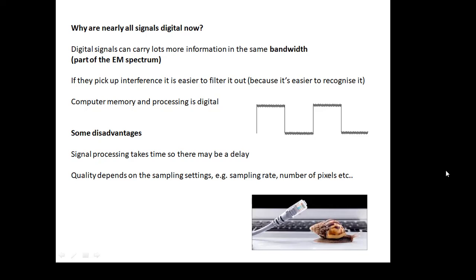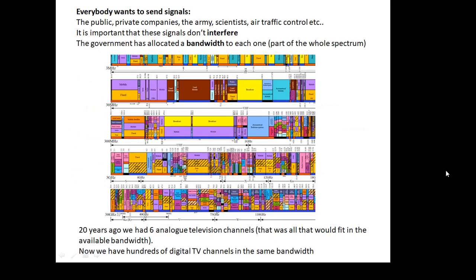There are a couple of disadvantages. If you process digital signals, it takes a little bit of time, which might involve a delay. These days, now that we have broadband, we can handle lots of information at the same time. That's not so much of a problem as it used to be. The quality depends on the sample settings, in other words, the sampling rate and the number of pixels.